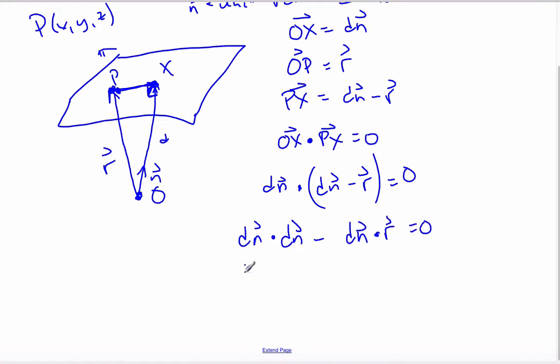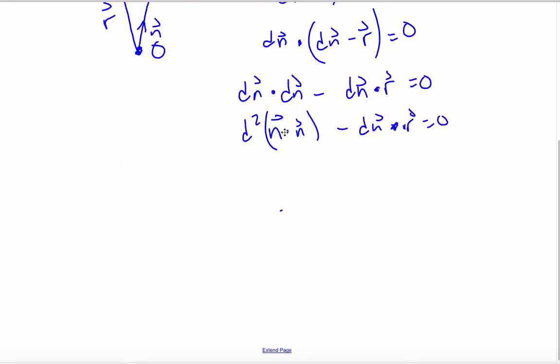Now, the scalar product is distributive, so I can say dN dot dN minus dN dot R equals zero. Well, if I consider this, this is the same thing as saying d squared n dot n minus dN dot R is zero. But, if you remember, n is a unit vector, which means, while I do know that this is the magnitude squared, equal, bring this over to dN dot R, the magnitude of the unit vector is one, and so this becomes d squared equal to d. I can factor out the d from the dot product, divide both sides by d, and I get n dot R is equal to d.